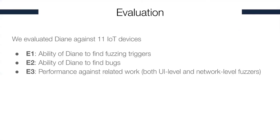To evaluate our approach, we used 11 IoT devices out of the 30 most popular on Amazon — we could not obtain the others because they were too expensive. We evaluated against three criteria: first, DIANE's ability to find fuzzing triggers; second, DIANE's ability to find bugs; and finally, the efficiency of DIANE compared to related work, specifically UI-level fuzzing and network-level fuzzers.